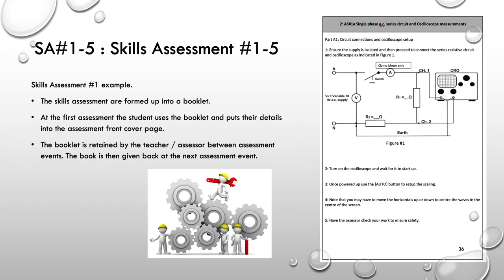Here's a picture of a typical skills assessment, or just part of it. Students have to set up a series circuit with resistors connected to an AC supply, measure the supply voltage and the voltage across one of the resistors, and then fill out tables on the next page. The skills assessments are nicely formed into a booklet printed out for them. The student uses the booklet, puts their details on the front cover, and then the booklet is retained by the teacher between assessment events. The book is given back at the next assessment event or at the reset point — but it stays in the possession of the teacher-assessor.